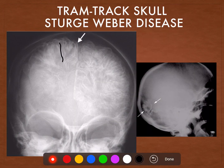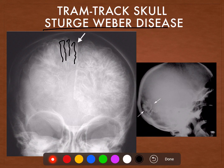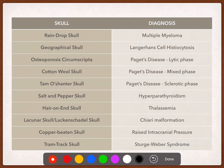Then we have serpiginous calcifications in the skull — these linear calcifications are known as the tram track calcifications, or the tram track skull, and is characteristic of Sturge-Weber disease. These linear or serpiginous calcifications are actually gyral calcifications that are along the gyri of the cerebral hemispheres.